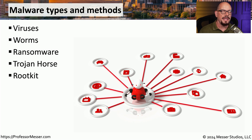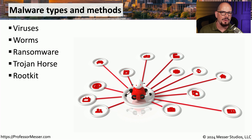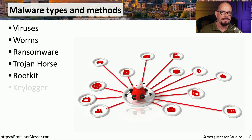A rootkit is malware that's able to hide within your operating system itself. This means it's very difficult to detect because it's part of your operating system itself. It's also very difficult to eradicate.